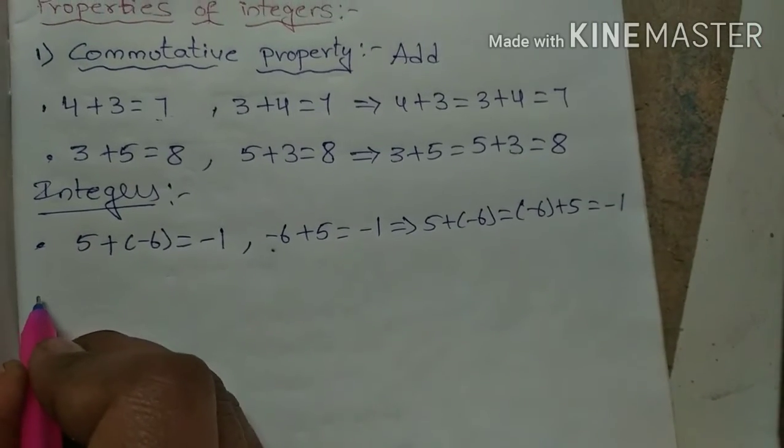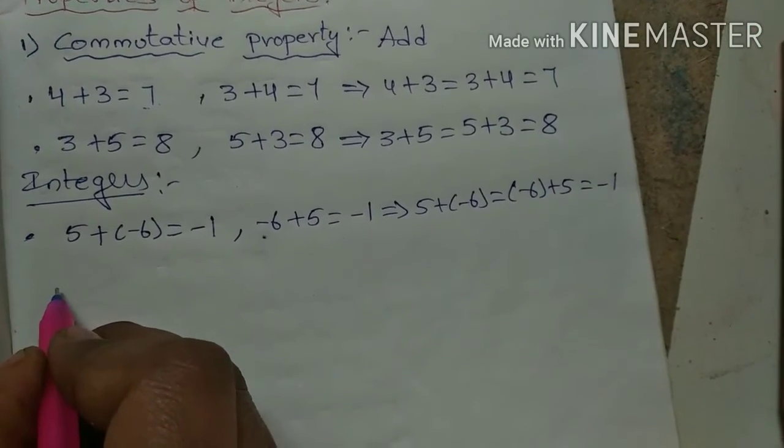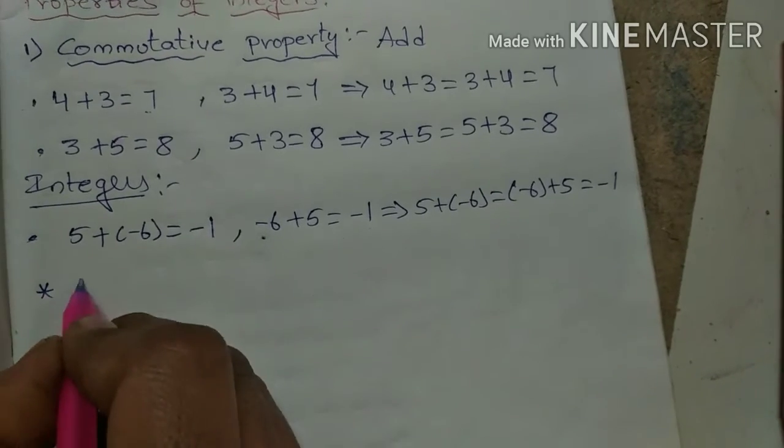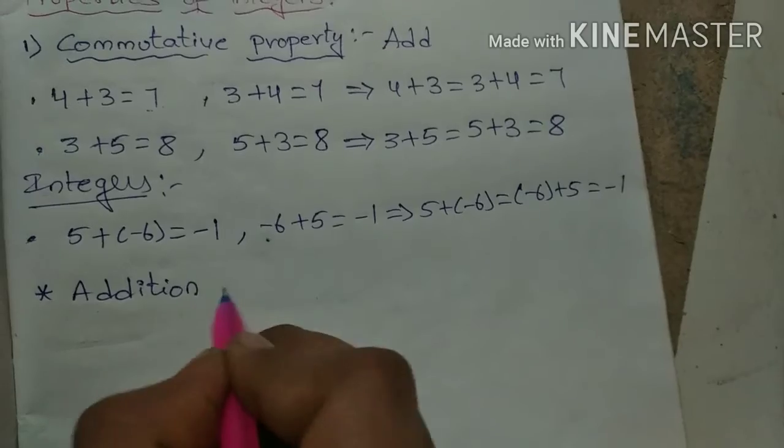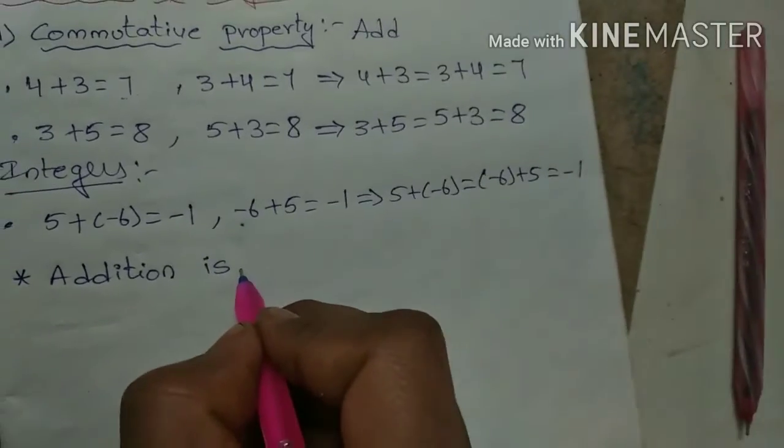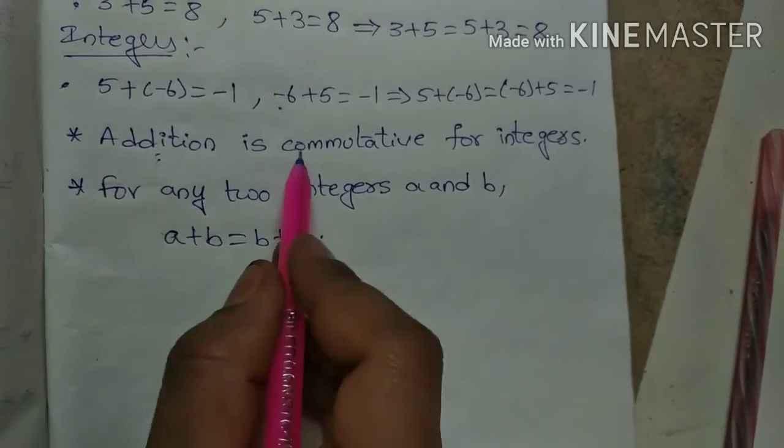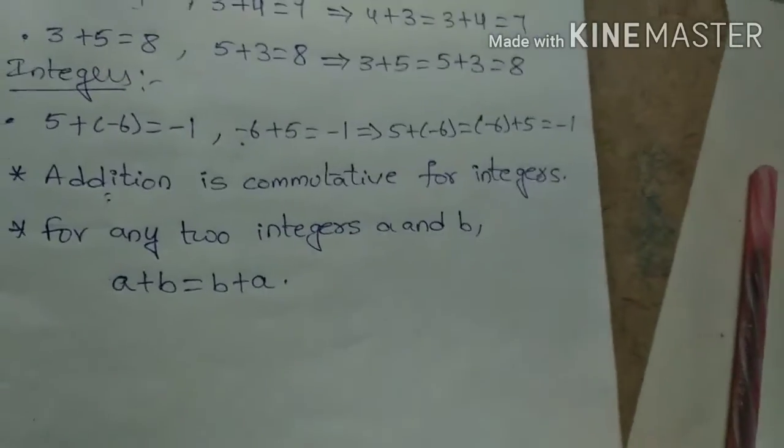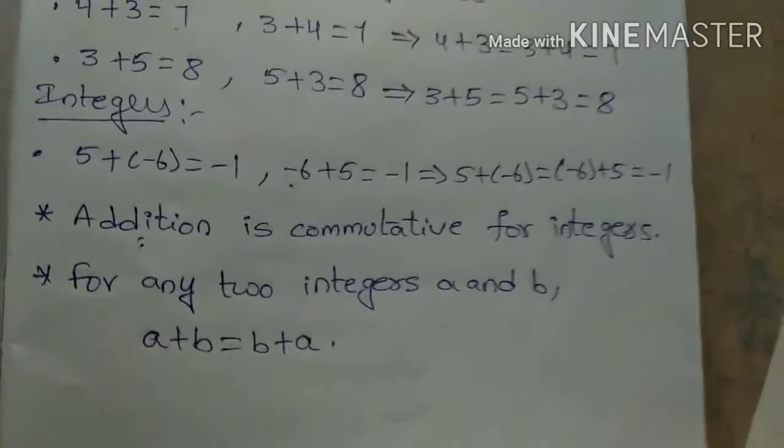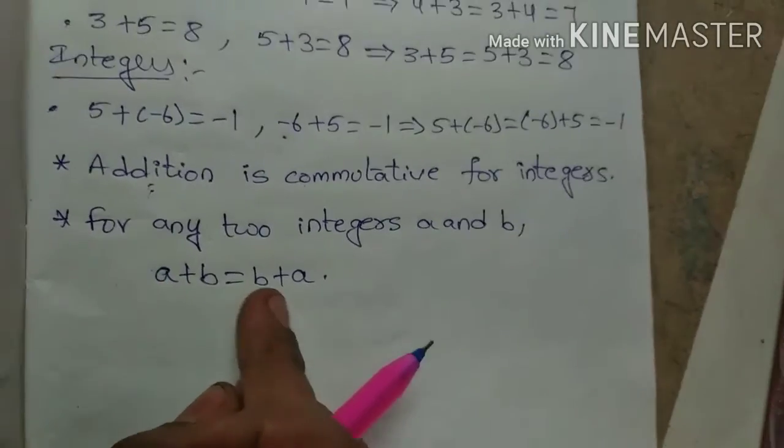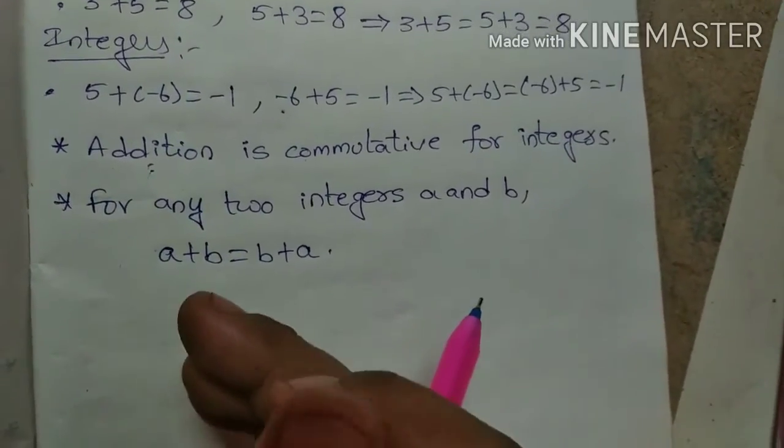So how to write this? Here are the points: Addition is commutative for integers. Next, for any two integers a and b, a + b equals b + a. This is the main formula. In general, we are saying it like this.